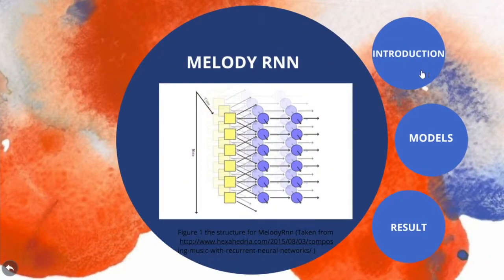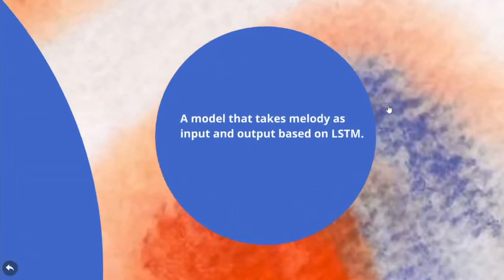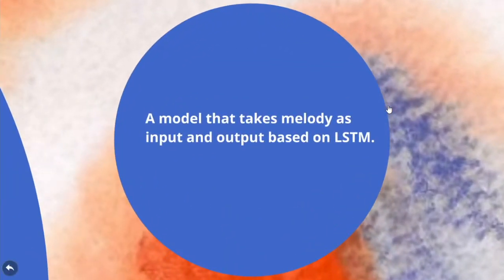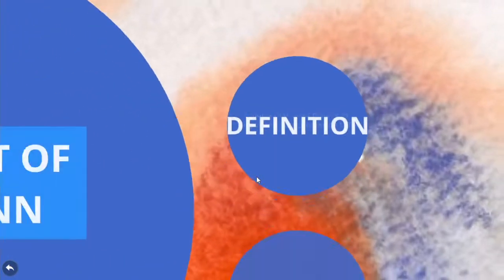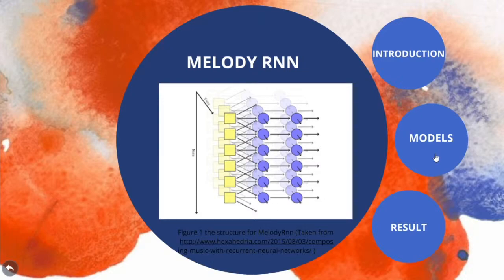We use MelodyRNN to generate melodies based on our own datasets. MelodyRNN is a two-layer LSTM structure, and its input and output are both melodies. With the usage of MelodyRNN, we can capture very essential information about the melody for our next recurrent neural network states based on RNN structure.